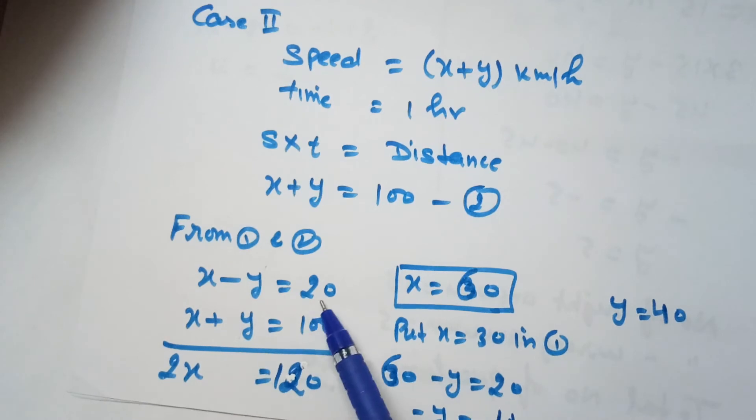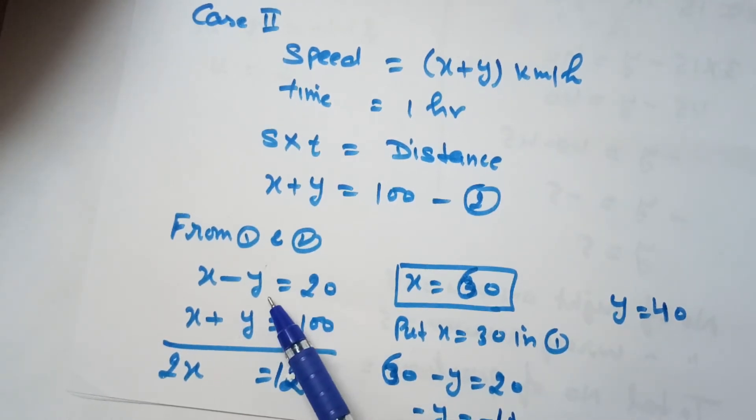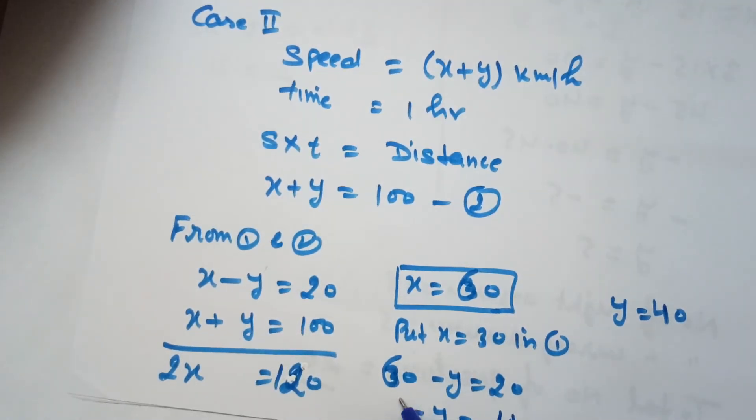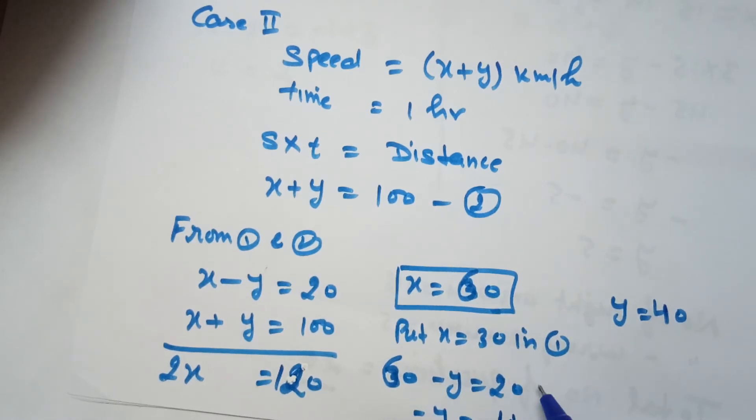Now put the value x=60 in equation 1. Equation 1 is x-y=20, so 60-y=20. Moving 60 to the right side, it subtracts from 20.